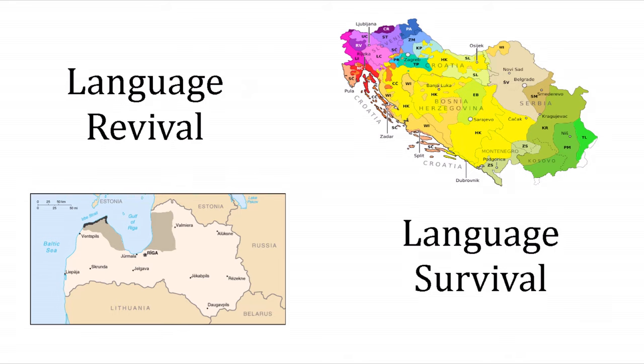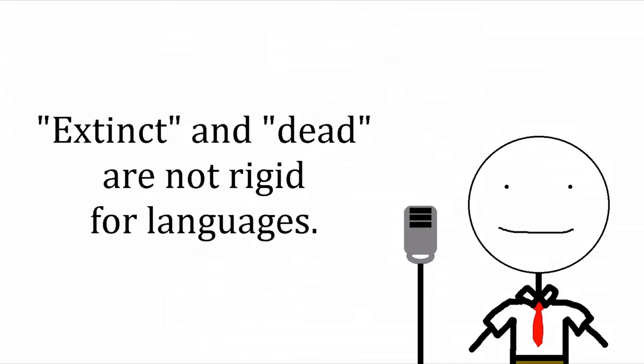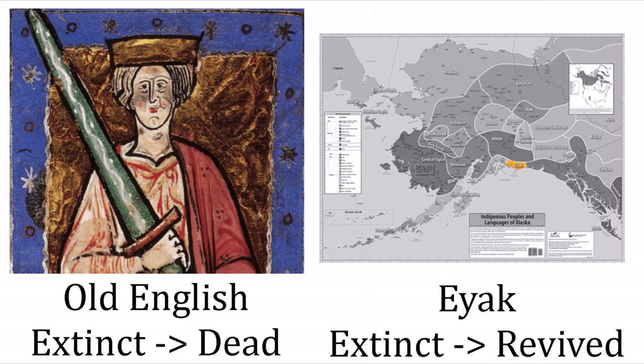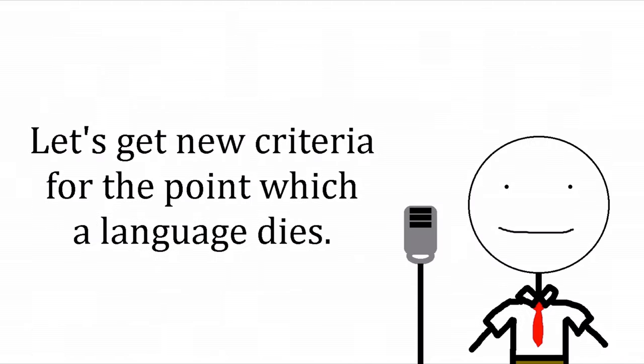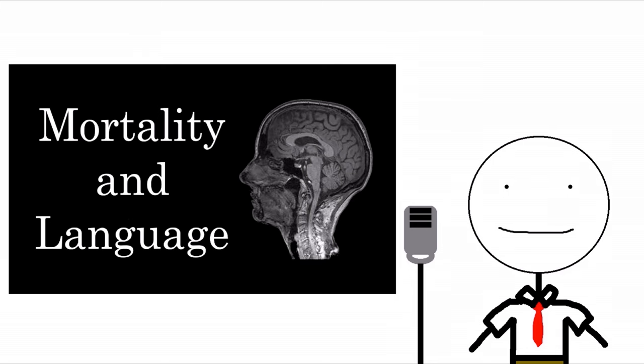Then we have revived languages and living languages. My main issue with the terms 'extinct' and 'dead' is that they work for dinosaurs but not languages. Languages are flexible within those categories — Hebrew went from dead to revived to arguably living, Old English went from extinct to dead, and Eyak went from extinct to revived. I'm going to steal some criteria from VSauce, from the video 'Selfie': you die at least three times — once when your body stops living, again when your name is spoken for the last time, and a third time when the last image of you is seen.